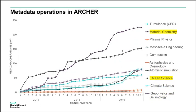Moving to the metadata load trend: there are only two big users — material chemistry and ocean science. Ocean science has had a steady load but with a couple of peaks and a big ramp-up in 2018. Material chemistry applications are just using a lot of metadata load. One interesting observation is climate science: in the last six months, climate science applications have started to use a lot of metadata — possibly due to running coupled ocean-atmosphere models. If you see this trend, they are going up pretty steeply.